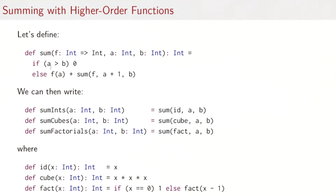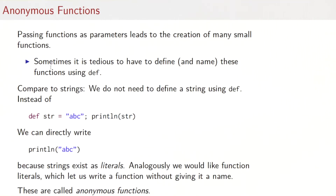Looking at the previous example again, we have successfully shortened the definition of sum ints, sum cubes, and sum factorials, but there's an annoying detail — we had to name all the little auxiliary functions. So we've gained some program code here, but we spent more in the definition of all these auxiliary functions. Passing functions as parameters can lead to the creation of many small functions, and sometimes that's tedious. Compare the situation to other types such as strings — we could write def str equals abc and then println str, but we don't have to. We can just as well write println abc directly, because strings exist as literals. Since functions are important in our language, it makes sense to introduce literals for functions as well. These literals are called anonymous functions because they do not have a name.